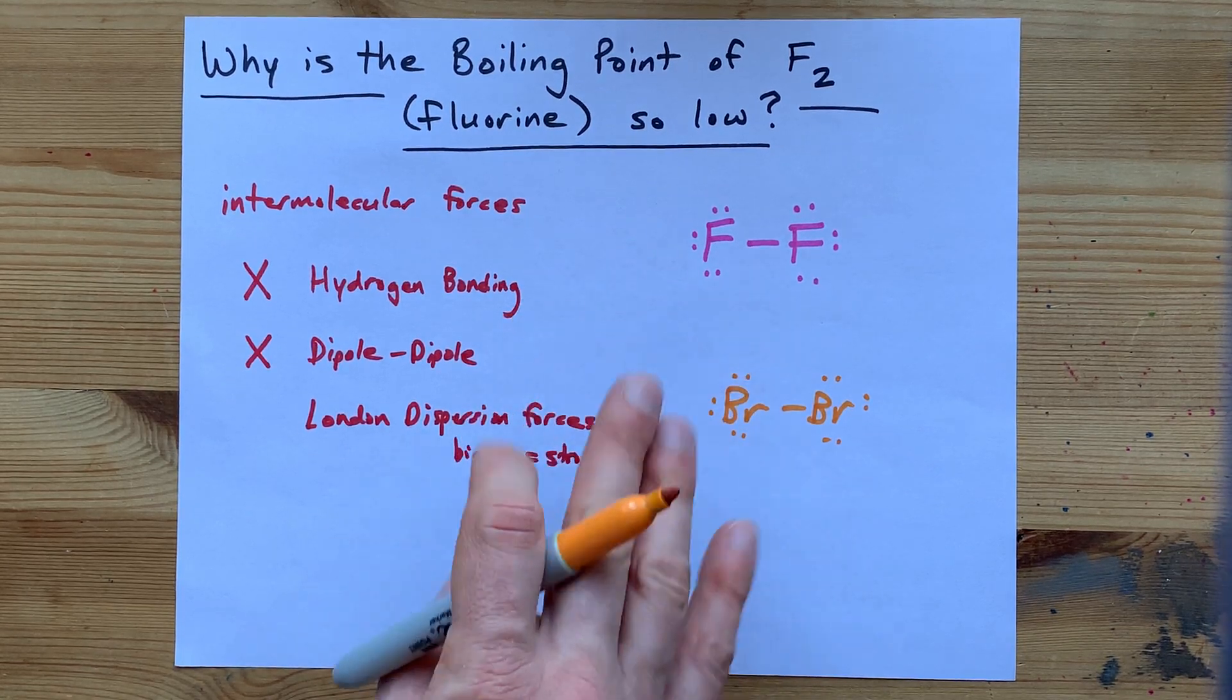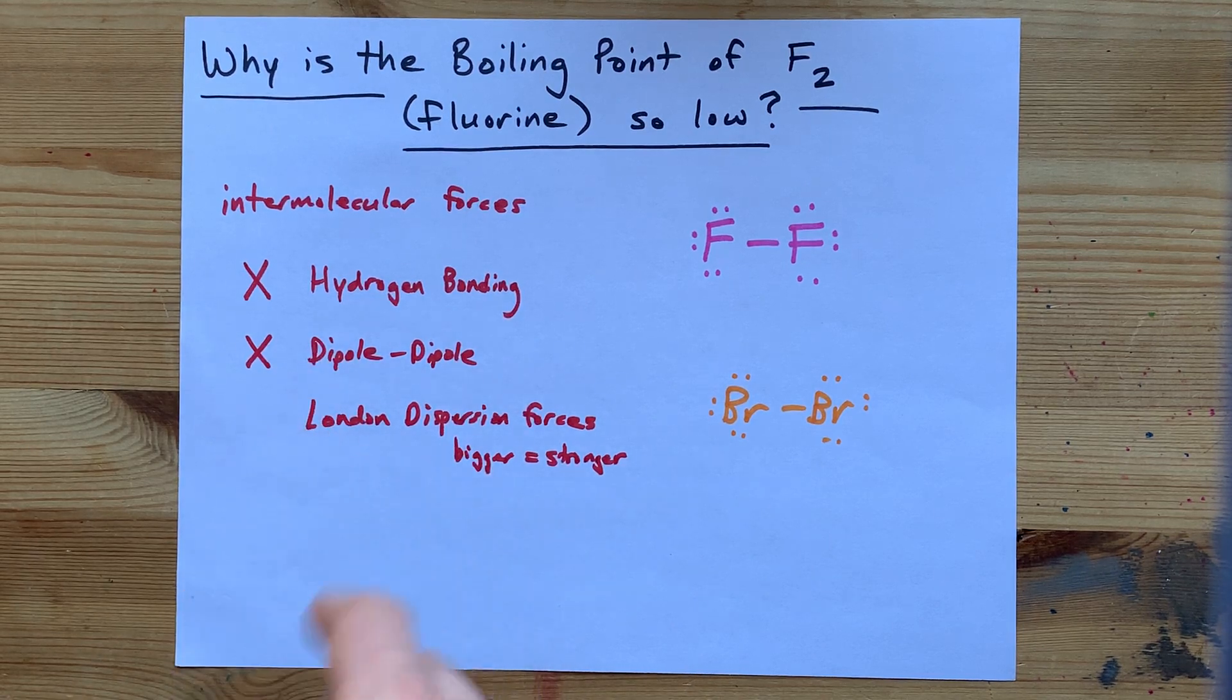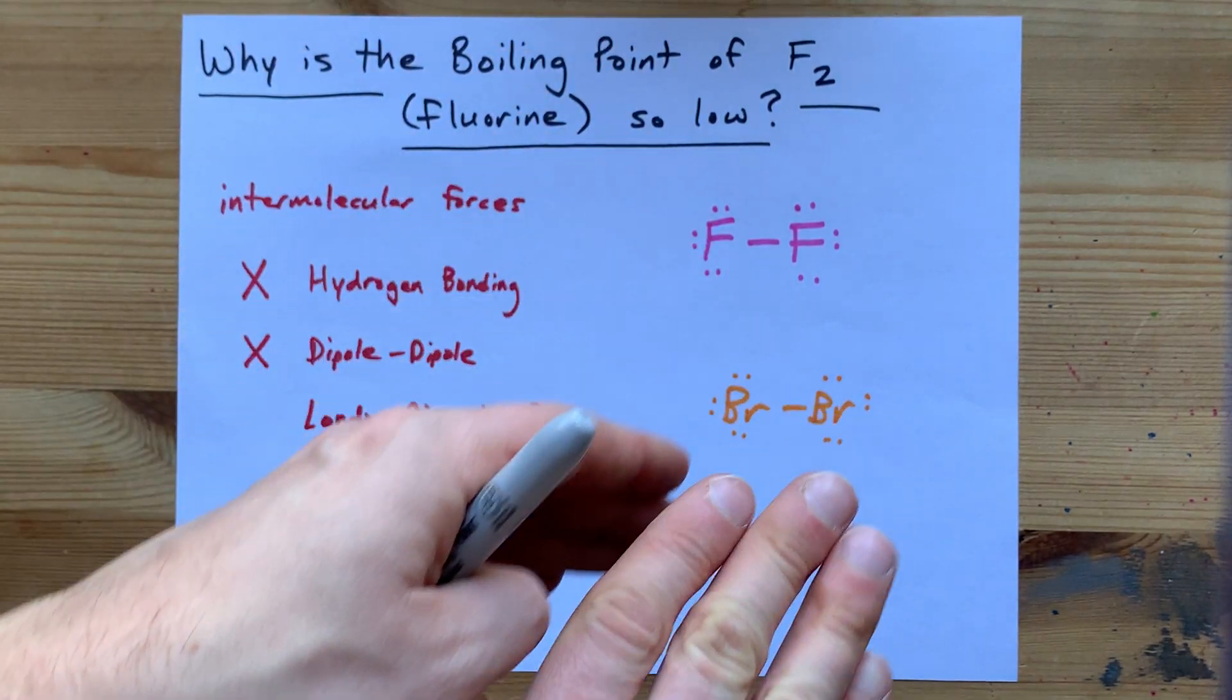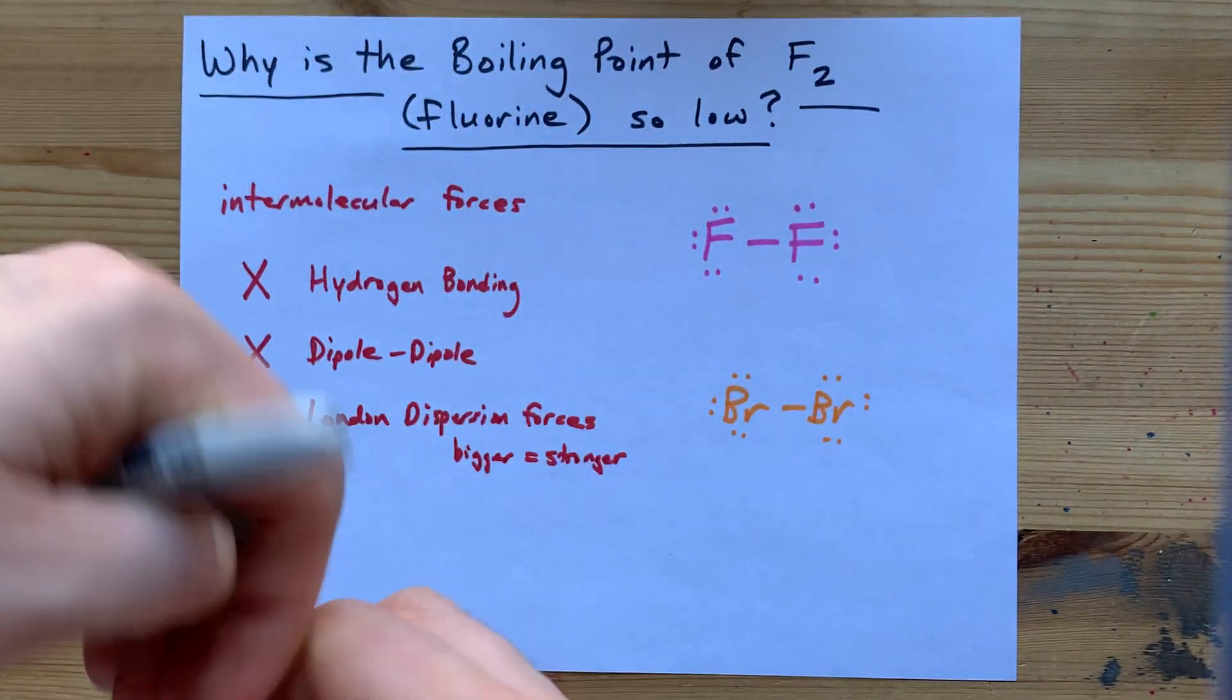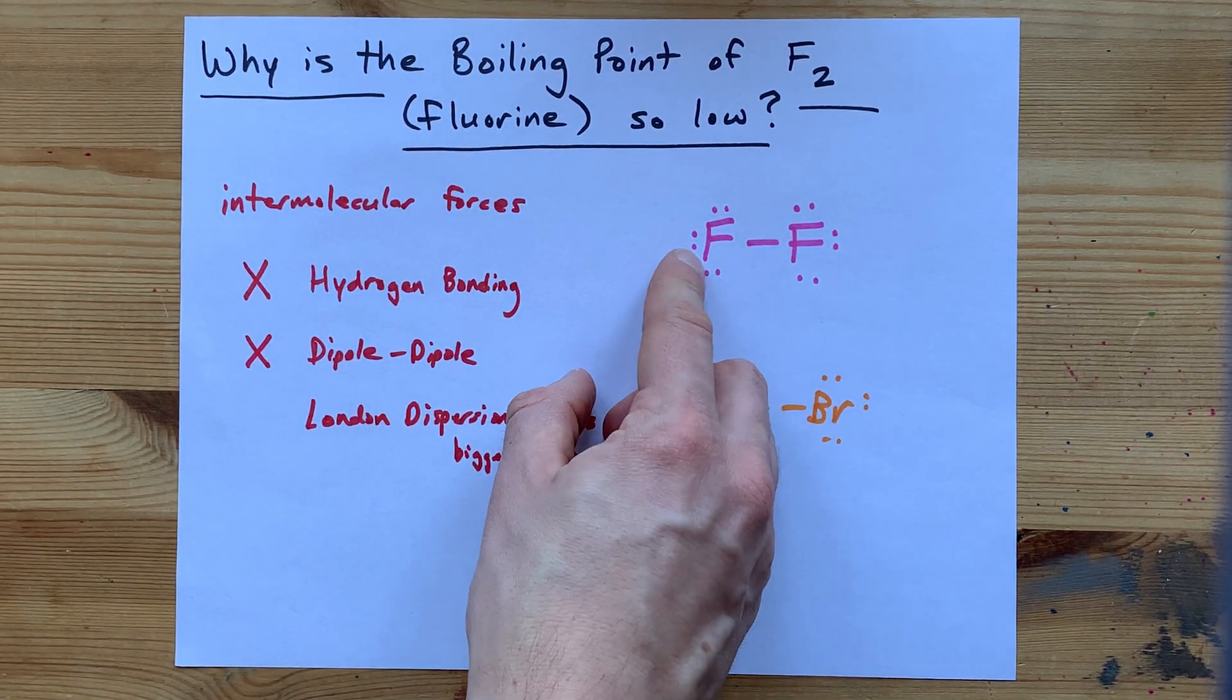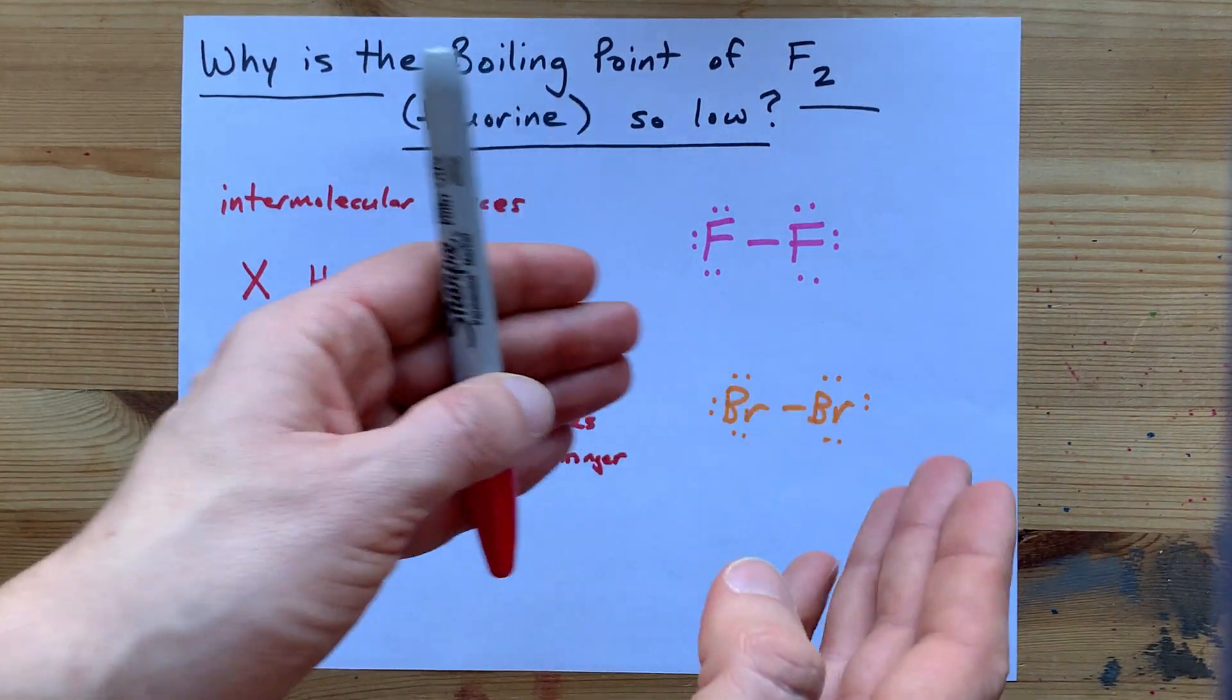London dispersion forces are very temporary dipoles that occur when the electrons that make up the molecule just happen by chance to be distributed more on one side than the other. These electrons you can think of as moving freely around the molecule, and there might just be one moment where it feels like more of the electrons are on one side than the other. That would give one side a delta minus and one side a delta plus, like a very slight minus side and a very slight plus side. And then if it encounters another molecule that's undergoing the same thing, that plus side and minus side might be a little attracted to each other.